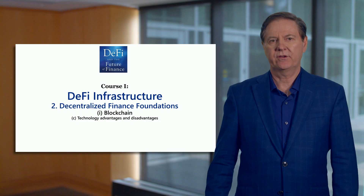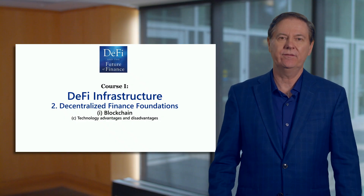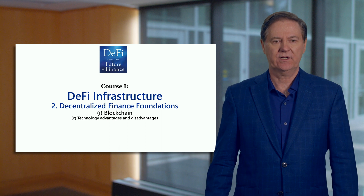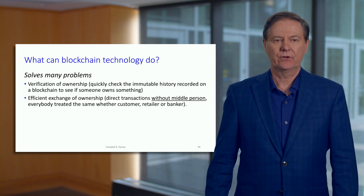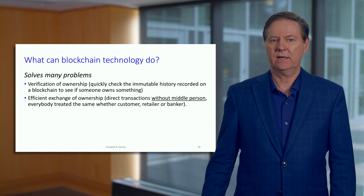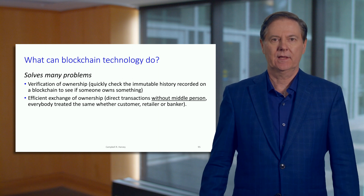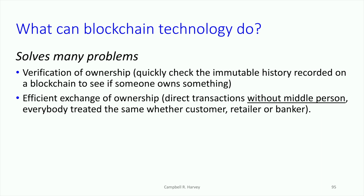Let me talk about some of the advantages and disadvantages of this technology. Blockchain actually adds a lot — it provides something that we didn't have before. It allows us to verify ownership. You can quickly check this immutable ledger to see if somebody actually owns what they claim to own. And again, this ledger is immutable, so it gives this verification of ownership.